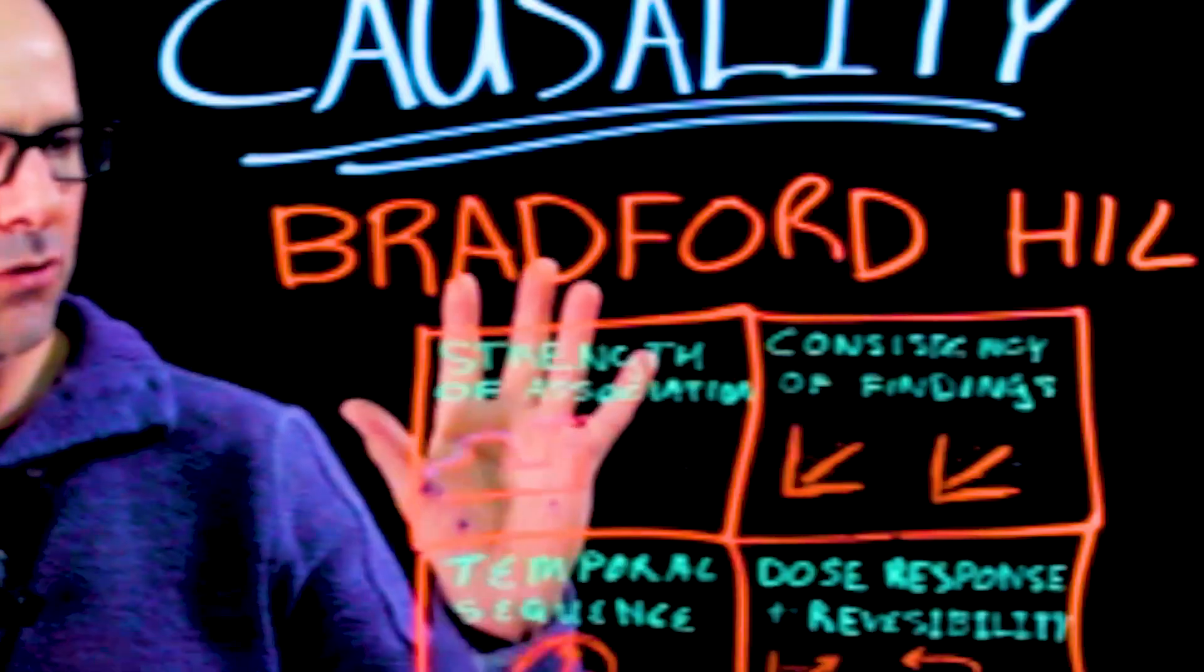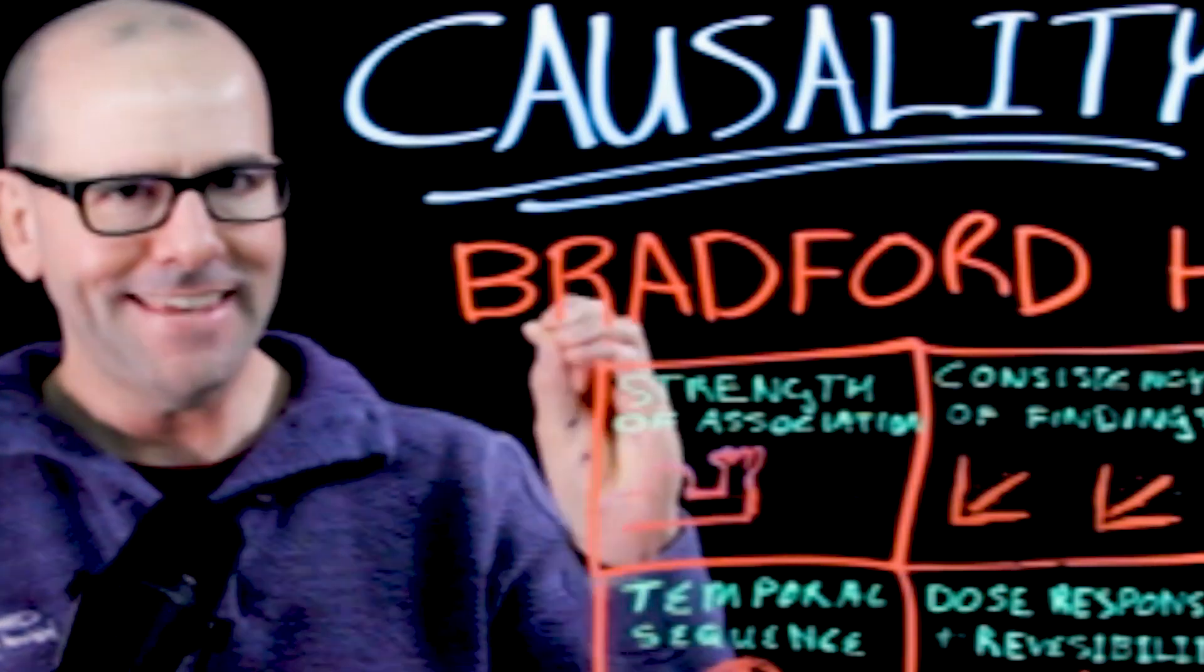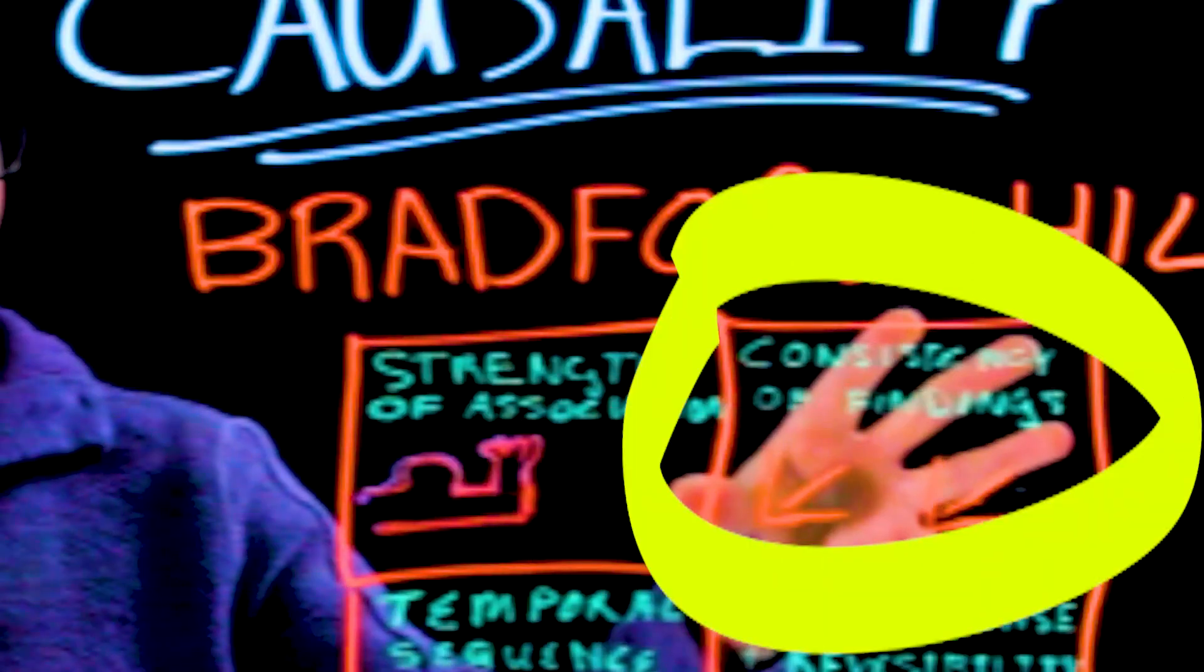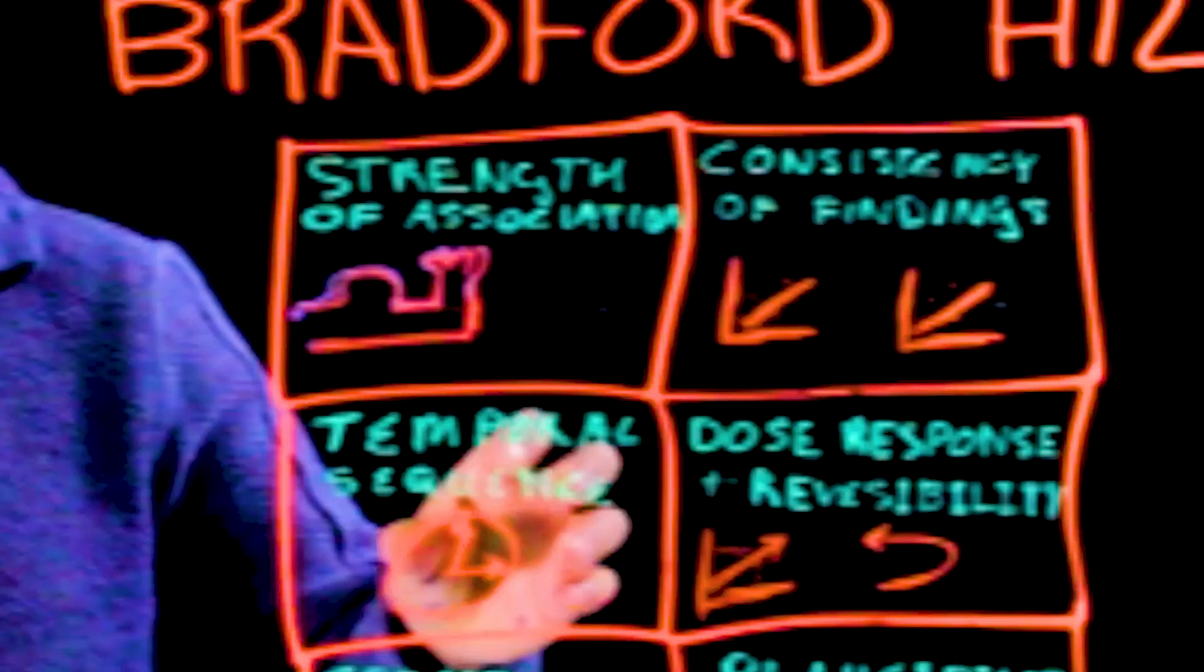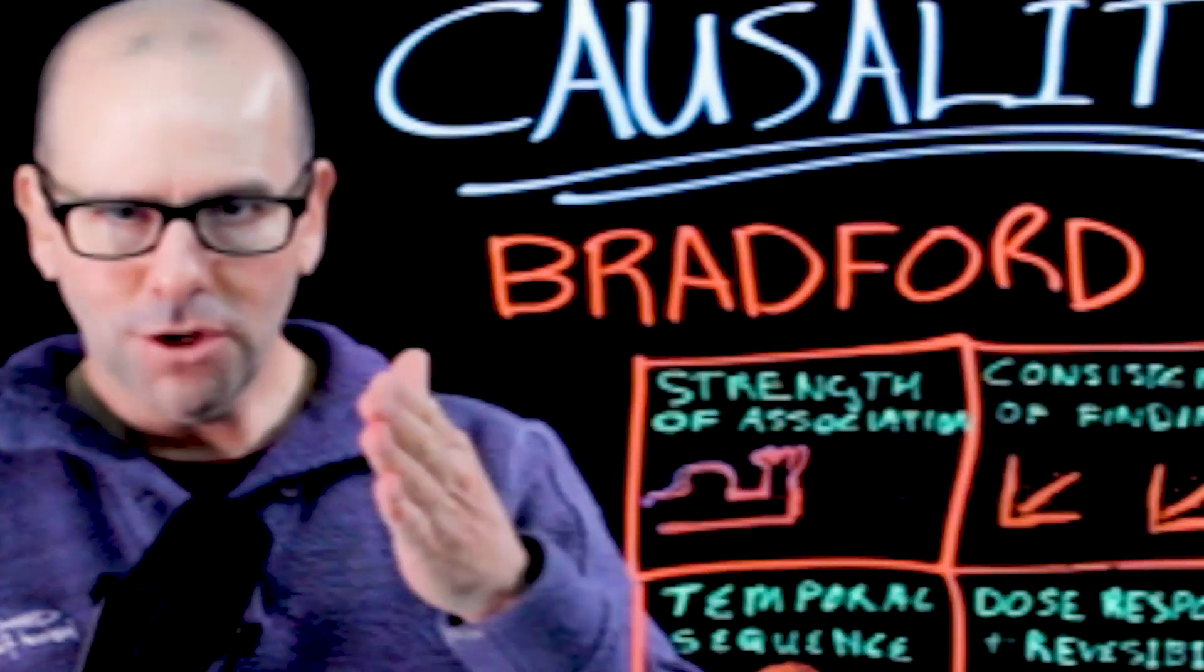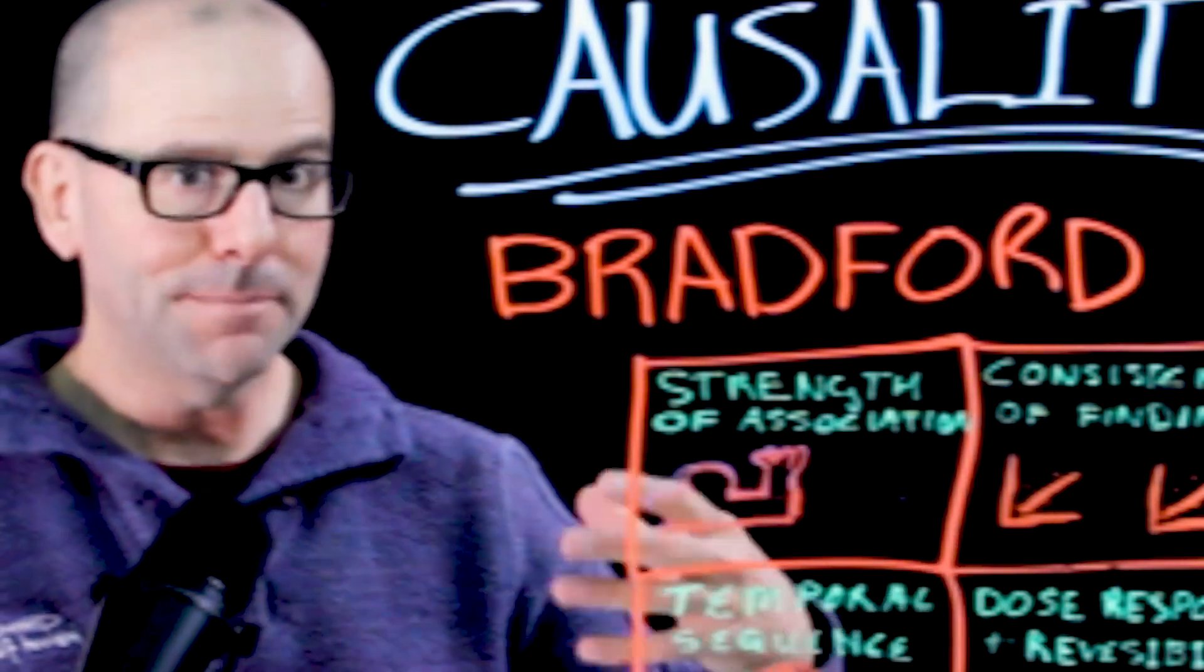So we'll go through them. Strength of association, there's a strong correlation between the exposure of interest and the outcome of interest. Consistency of finding, if we repeated the study again and again, we would observe the same correlation. Temporal sequence, the cause precedes the effect, the exposure precedes the outcome. It makes sense.